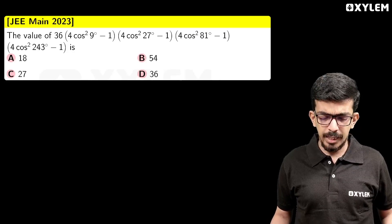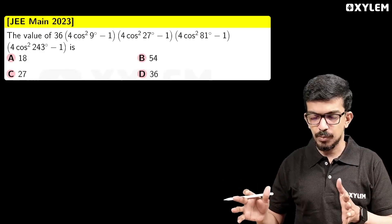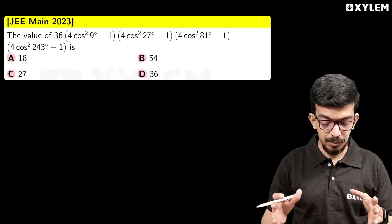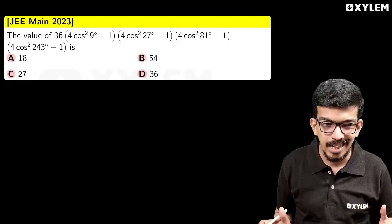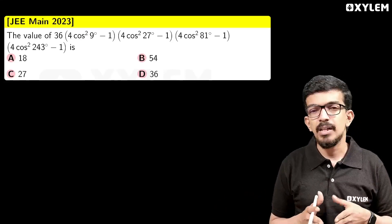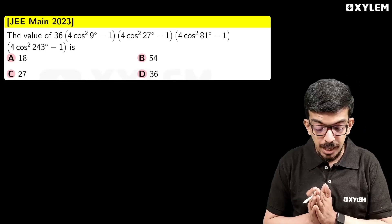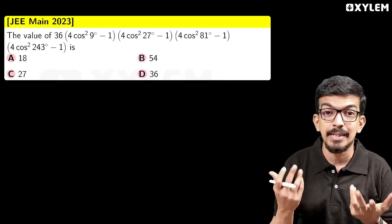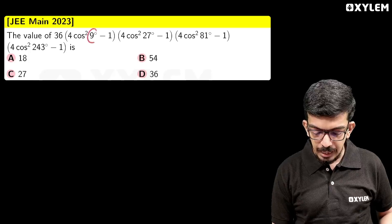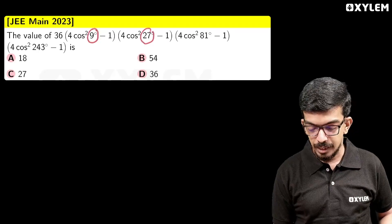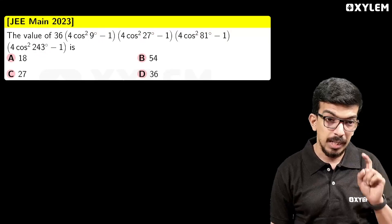If we look at the values of 4cos²9° − 1, 4cos²27° − 1, and so on — these are not standard angles we can evaluate directly. We might get stuck. But there is a pattern. The angles are 9 degrees, 27 degrees, 81 degrees, and 243 degrees — that's what we observe.